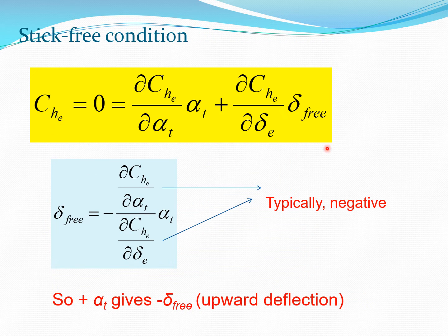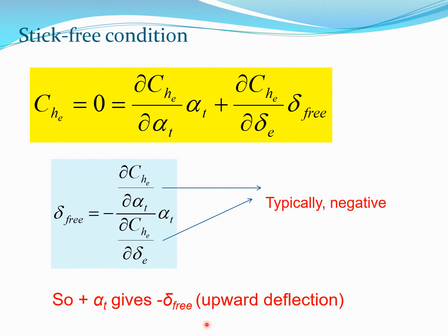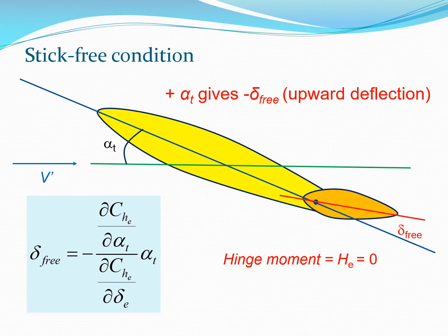From that equation for delta_free we can solve and obtain the expression shown in the blue box. Some insight: the two derivatives are typically negative from wind tunnel tests, so the negatives cancel out, and the effect is that a positive alpha_t gives a negative delta_free — meaning the elevator deflects upward in the stick-free condition. Pictorially, if the tail section is at angle alpha_t with respect to the velocity V, then the elevator floats to a position where it makes angle delta_free with the tail's zero lift line.